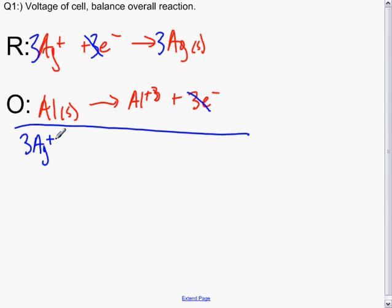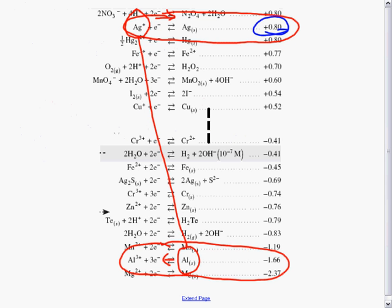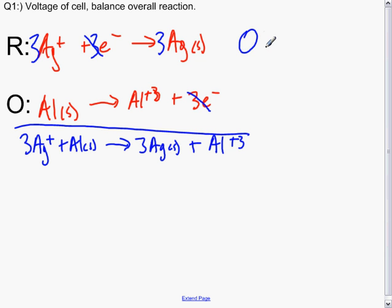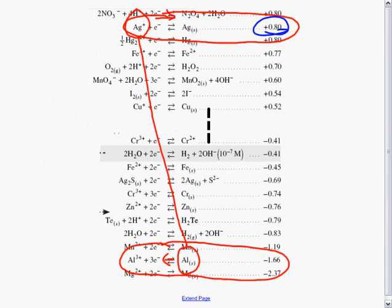Three Ag⁺ plus one Al, three Ag solid plus Al³⁺. That's our overall reaction. Now what will be the overall cell voltage? For the reduction, we determine that the cell voltage was plus 0.80V. And for our oxidation with aluminum, it is minus 1.66V.